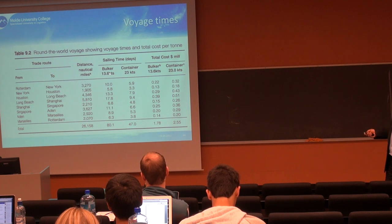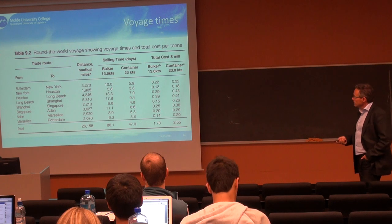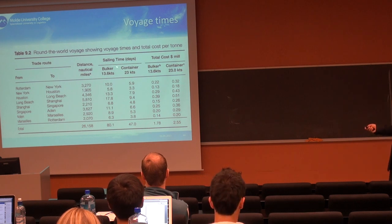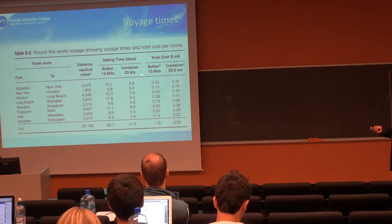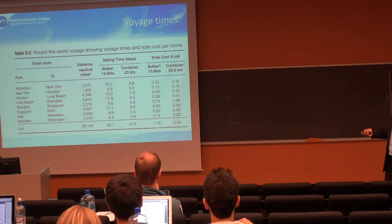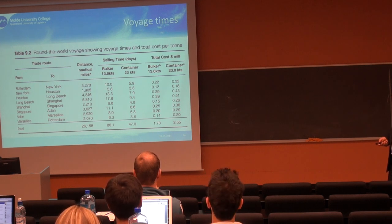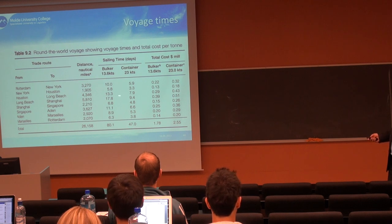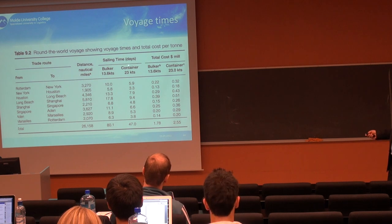Looking at typical sailing times: a transatlantic voyage from Rotterdam to New York with a bulk ship slow steaming at 13 to 14 knots would take around 10 days. With a faster container vessel it would take six days. The new Triple-E class is designed for around 16 knots, so it will be somewhere in between. For a trans-pacific link from the US West Coast to China, that would typically take 16 days with bulk and around 10 days with a faster container vessel.